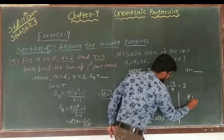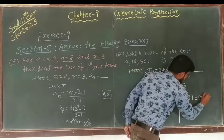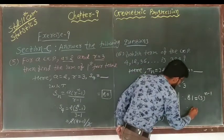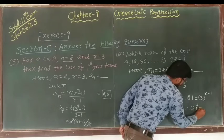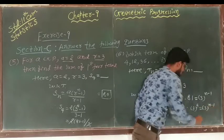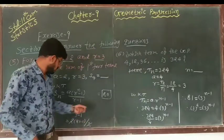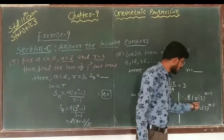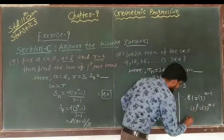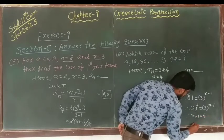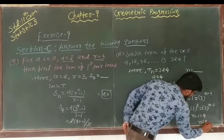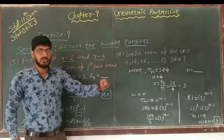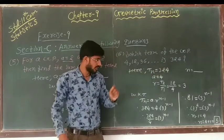This gives 81 equals 3 raised to (N minus 1). Since 81 equals 3 raised to 4, we can write 3 raised to 4 equals 3 raised to (N minus 1). Since the bases are the same, we compare powers: N minus 1 equals 4, therefore N equals 4 plus 1 equals 5. So the fifth term of the GP is 324.